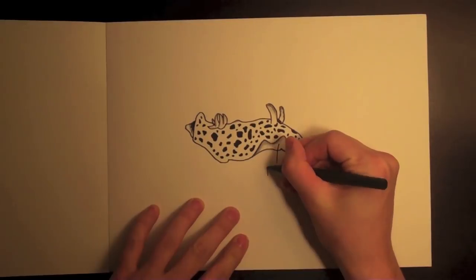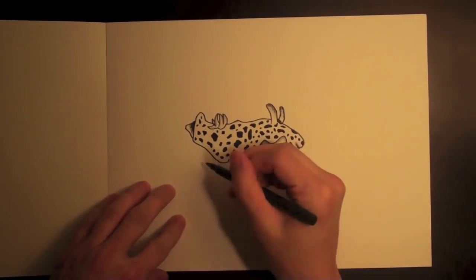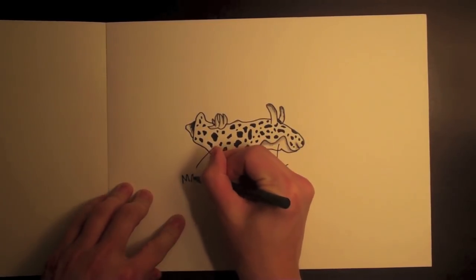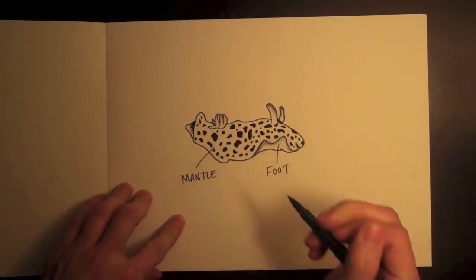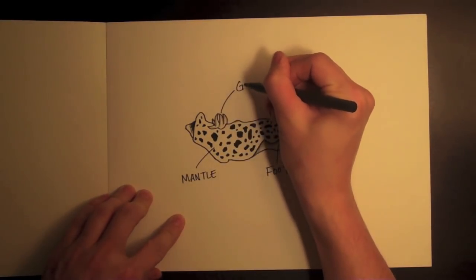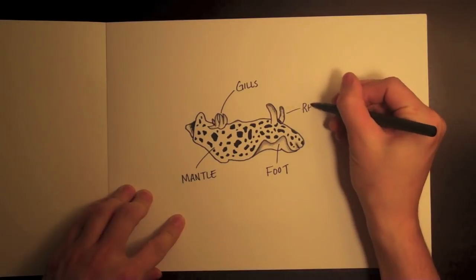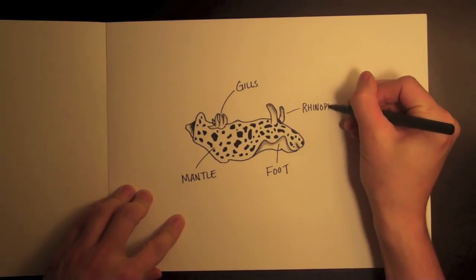Their anatomy is intricate yet quite simple. They have a muscular foot for maneuvering, a mantle, or the main part of their body, gills for breathing, and these really awesome sensory appendages on their heads called rhinophores that are used to taste, smell, and feel.